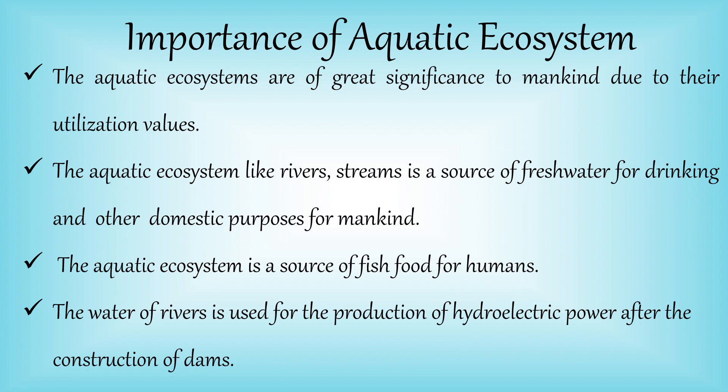All these aquatic ecosystems are very important and play a vital role in the life of mankind. Aquatic ecosystems like rivers and streams are a source of fresh water for drinking and other domestic purposes. They are also a source of food in the form of fish. Water from rivers is also used for the production of hydroelectric power — a renewable source of energy — after the construction of dams.